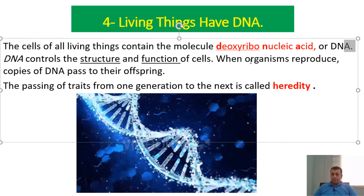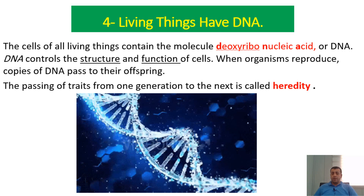When organisms reproduce, copies of DNA pass to their offspring — that means to their babies. For example, if your father's eyes are green and your eyes are also green, that trait is being passed by DNA. We call that process heredity: the passing of traits from one generation to the next.